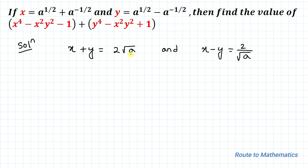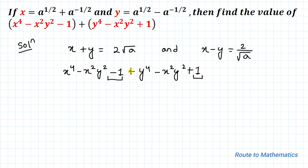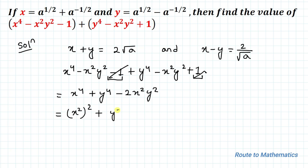So we have x plus y equals to 2√a and x minus y equals to 2/√a. Now, we are asked to find x⁴ minus x²y² minus 1 plus y⁴ minus x²y² plus 1. The minus 1 and plus 1 cancel out, giving us x⁴ + y⁴ − 2x²y². We can write x⁴ as (x²)² and y⁴ as (y²)², so this becomes (x²)² − 2x²y² + (y²)², which matches the algebraic identity (a − b)² and can be written as (x² − y²)².